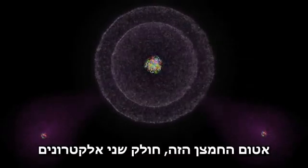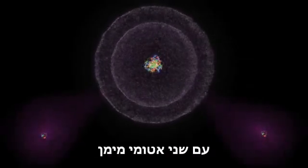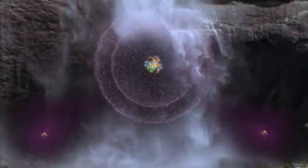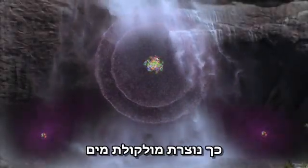This oxygen atom is sharing two of its electrons with two hydrogen atoms. This is how a water molecule is formed.